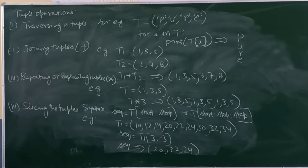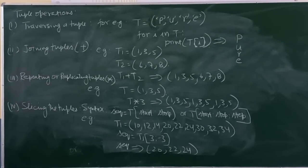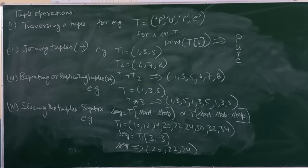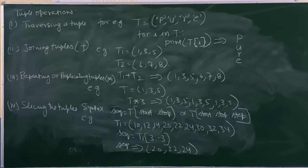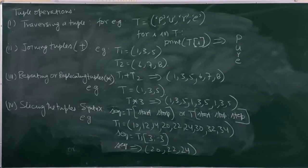Example, T equals 1,3,5, then T times 3 will give you 1,3,5,1,3,5,1,3,5. Another is slicing the tuple.